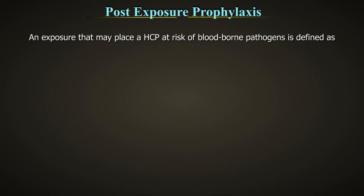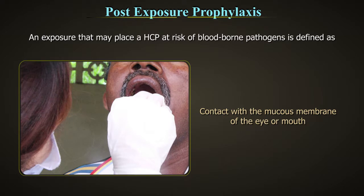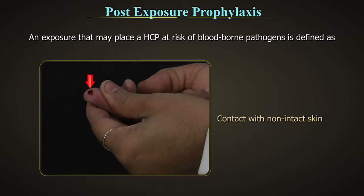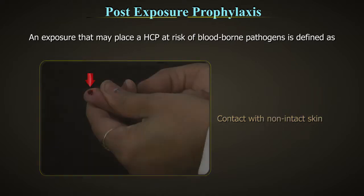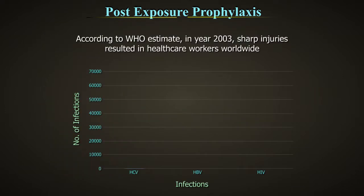Sharps being generated in any healthcare setting are of various types. An exposure that may place healthcare professionals at risk of blood-borne pathogens is defined as a percutaneous injury, for example a needle stick or cut with a sharp instrument, contact with the mucous membrane of the eye or mouth, or contact with non-intact skin, particularly when exposed skin is chapped, abraded or afflicted with dermatitis.